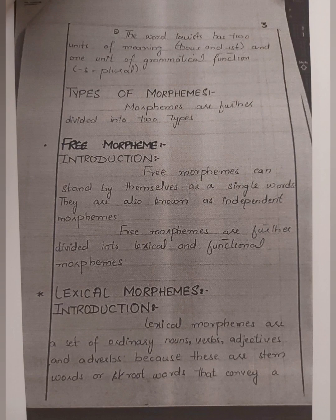We have two types of morphemes: free morpheme and bound morpheme. Free morphemes have further categories — lexical morpheme and functional morpheme — and bound morphemes have derivational morpheme and inflectional morpheme. A free morpheme means the stem word that can stand alone. Lexical morphemes are independent morphemes such as nouns, adjectives, verbs, or adverbs that can stand alone — for example, 'beautiful', 'gorgeous'.